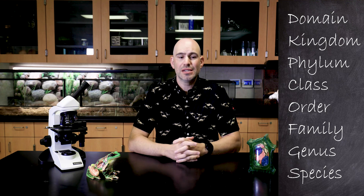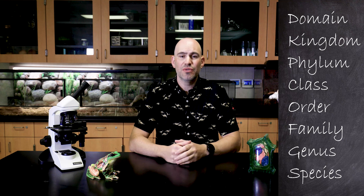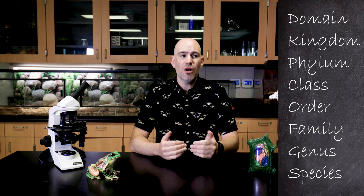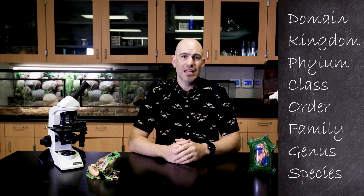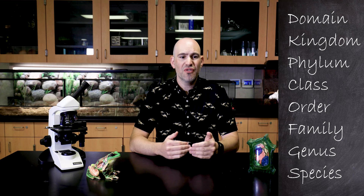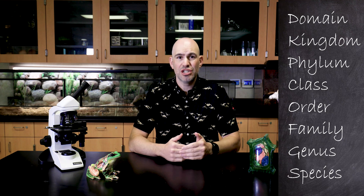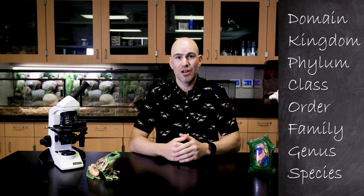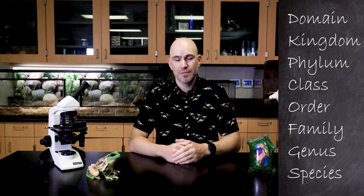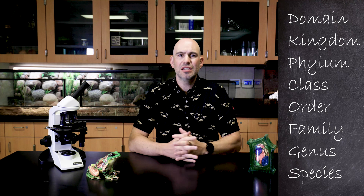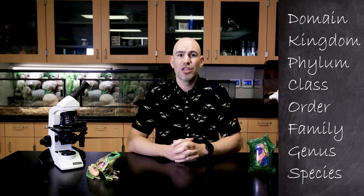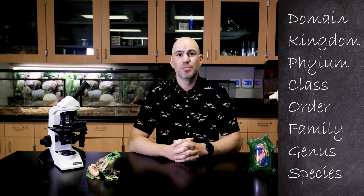We use these to help us differentiate organisms. We also use these eight taxonomical groups to help us find relationships between other species and organisms. Let's talk about what a human's eight taxonomical groups are.